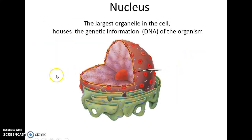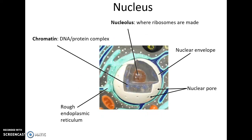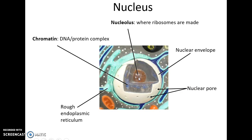The nucleus is the largest organelle and stores our genetic information in the form of DNA. It has the nuclear envelope, a double-membrane structure with large nuclear pores to allow large structures to pass in and out. Within the nucleus is the nucleolus, which makes the components of ribosomes, as well as DNA coiled up in the form of chromatin — a DNA-protein complex.